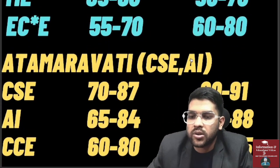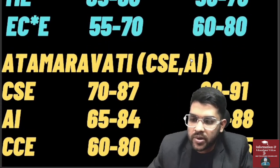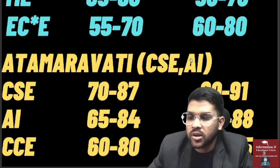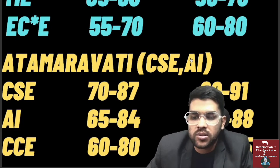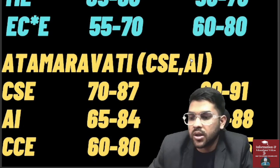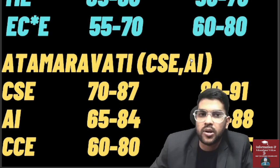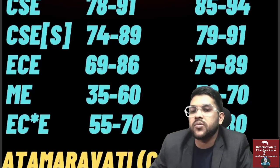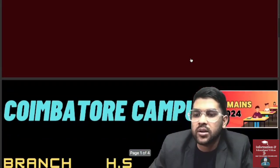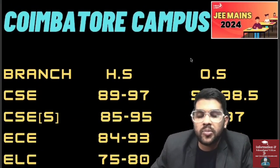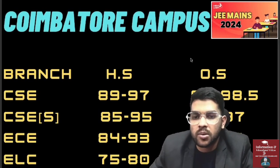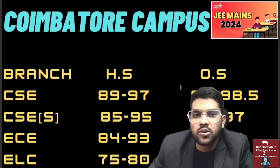For Amaravati campus: CSE 70 to 87, AI 65 to 84, CCE (computer and communication engineering) 60 to 80 for home state. For other state: CSE 80 to 91, AI 76 to 88, CCE 70 to 85. This was the complete information regarding all campuses of Amrita University safe percentile JEE-wise. For AEEE, I have already provided a video and will provide rank-wise information soon — kindly subscribe the channel, and if you want my guidance, feel free to contact me. Thank you.